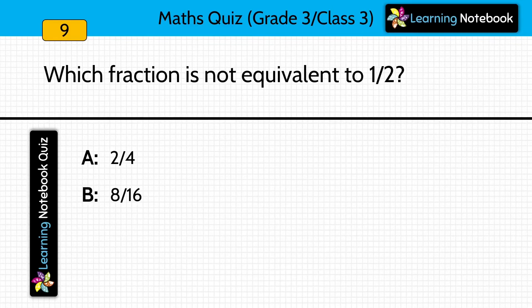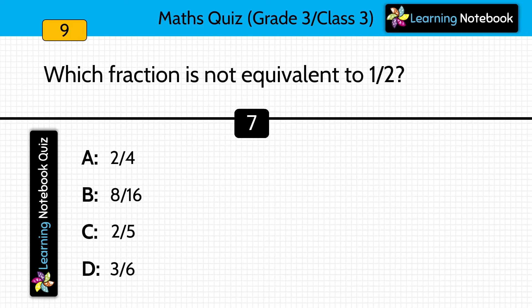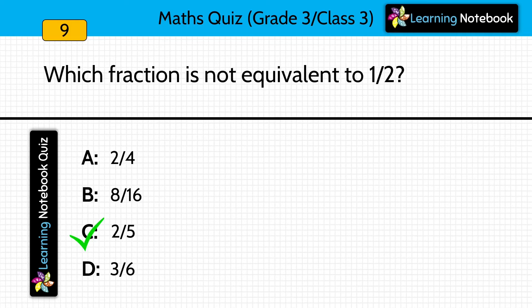Which fraction is not equivalent to 1/2? Out of these four options, see which one of them is not equal to 1/2. Answer is option C, 2/5. Because if you look at the remaining options, you will see that all of them equal 1/2 on simplification. So the answer is 2/5.